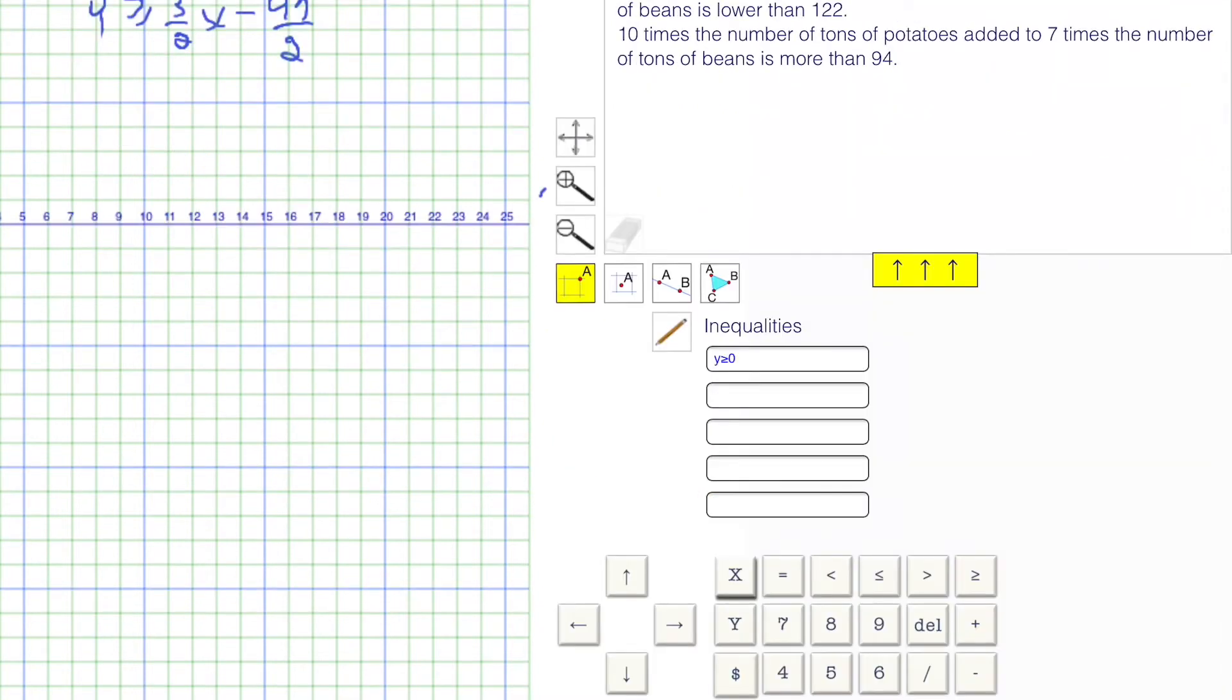y is greater than or equal to 0, and for the next one, we have y is greater than or equal to 3 over 2x minus 49 over 2.